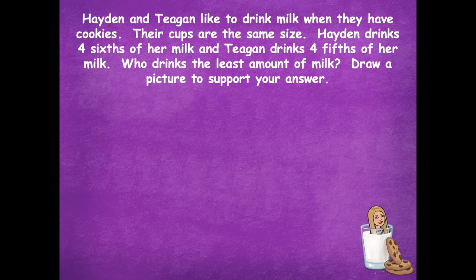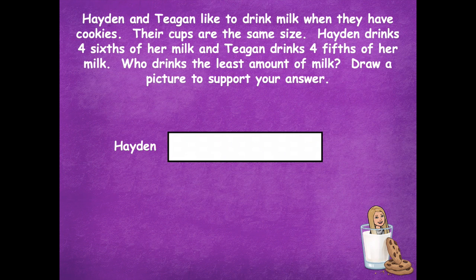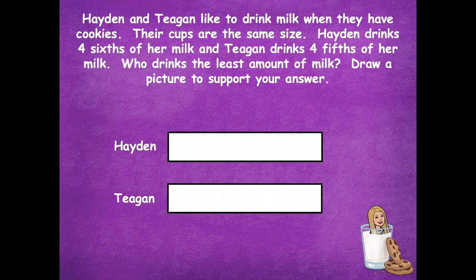There are some cookies and milk. It says: Hayden and Tegan like to drink milk when they have cookies. Their cups are the same size. Hayden drinks four-sixths of her milk and Tegan drinks four-fifths of her milk. Who drinks the least amount of milk? Draw a picture to support your answer. Here we have Hayden and Tegan. Pause the video, draw out your model for Hayden's four-sixths and Tegan's four-fifths of her milk, figure out who drinks the least amount of milk, and click play when you're ready.